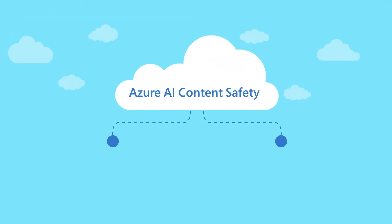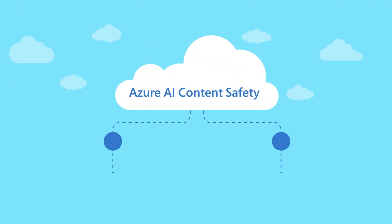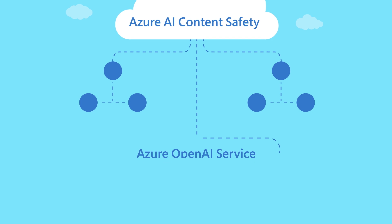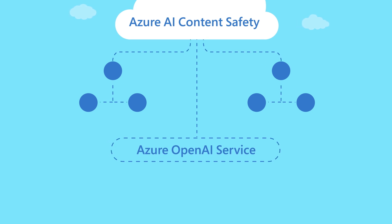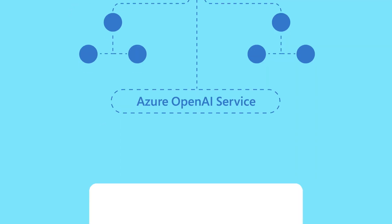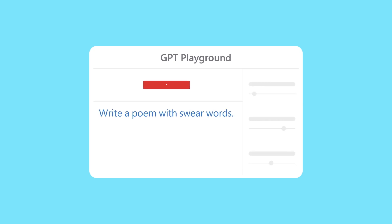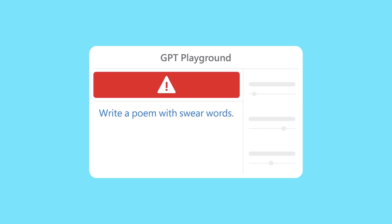Azure AI Content Safety models are reliable and effective, used by other Azure AI products to monitor both user and AI-generated content. Azure OpenAI leverages Azure AI Content Safety models in its content filter to block prompts that violate its content management policies.